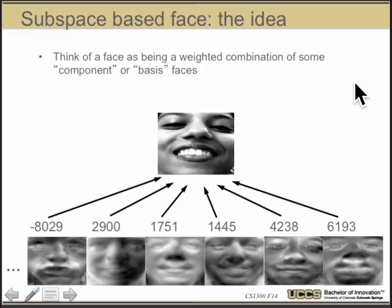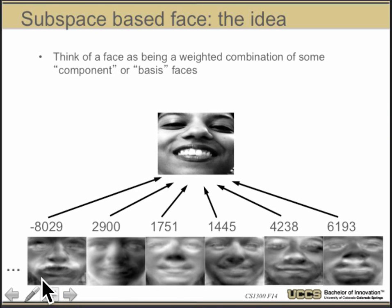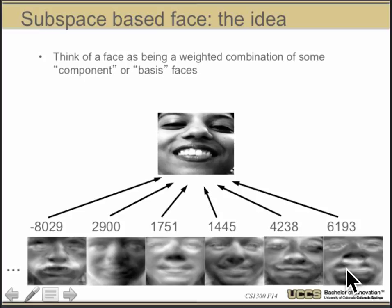Now that I've thought about how to represent a face, for eigenfaces and recognition I want to think of the face as a weighted combination of some component or basis faces. Down here we see some eigenfaces or base faces, where I can think of this face as a combination: minus 8,000 times this image, plus 2,900 times this image, plus 1,700 times this image, and so on. I can take a weighted combination of those vectors — because an image is a vector — and I get a new vector which approximates an image. We can actually approximate images really well if we choose a good basis.